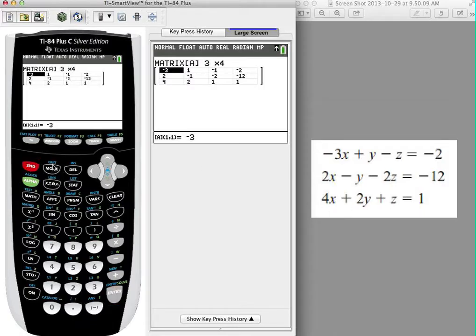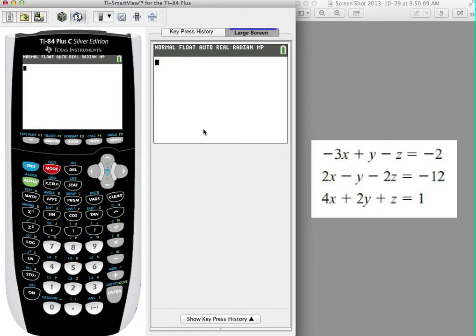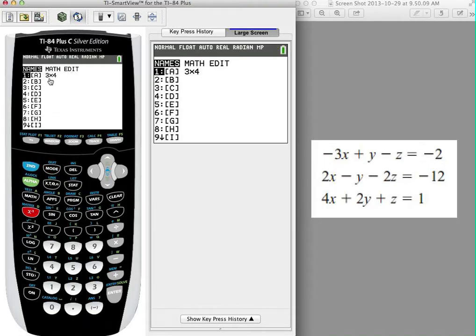But I'm done editing the matrix, so I need to quit out of this. I'm going to hit second quit right here, and now I'm out of the editing mode, so I can't edit that matrix anymore. Now I'm going to go back into the matrix menu, and this time instead of editing that matrix, you'll now see that matrix A has three by four, so it's got some information in it.